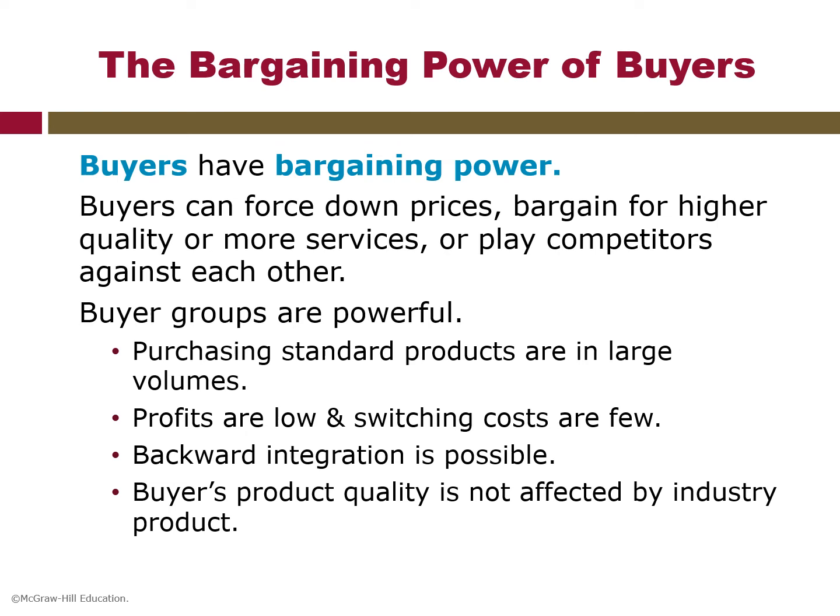Large volume buyers are also powerful in industries with high fixed costs. Another condition is when the products purchased from the industry are standard or undifferentiated — buyers are confident they can always find alternative suppliers and play one company against another, as in commodity grain products. The third reason is when the buyer faces few switching costs — switching costs lock the buyer to a particular seller, and conversely, buyer power is enhanced if the seller faces high switching costs.